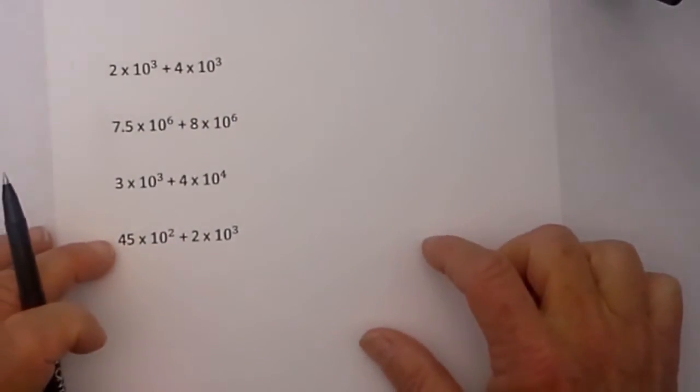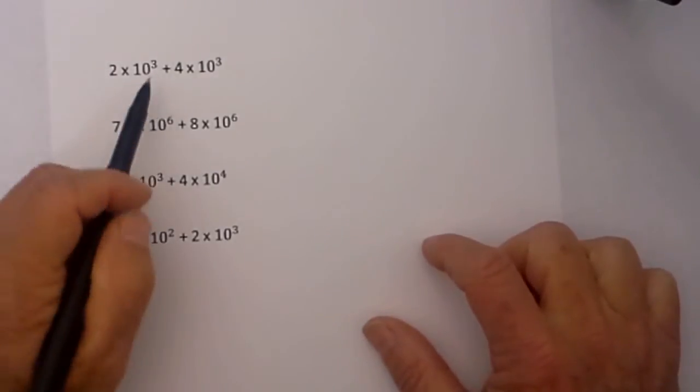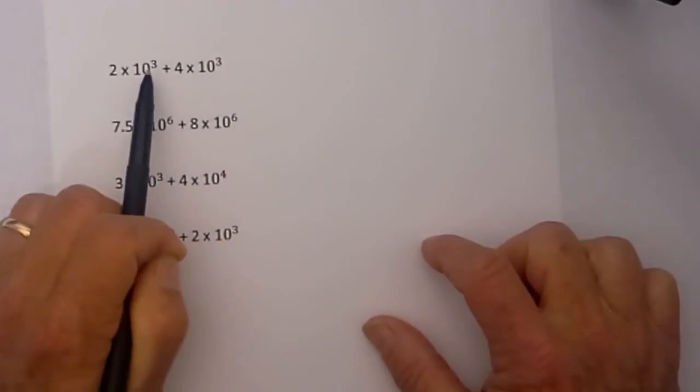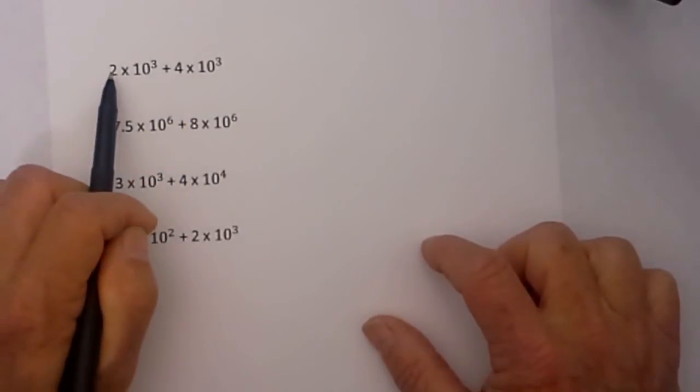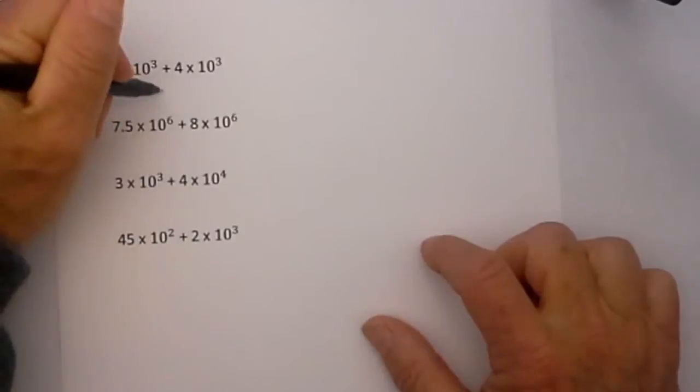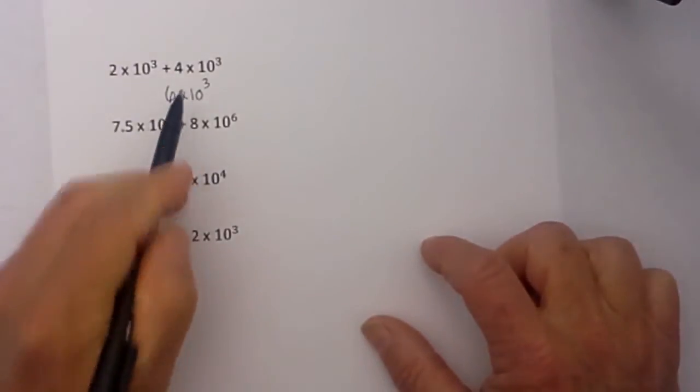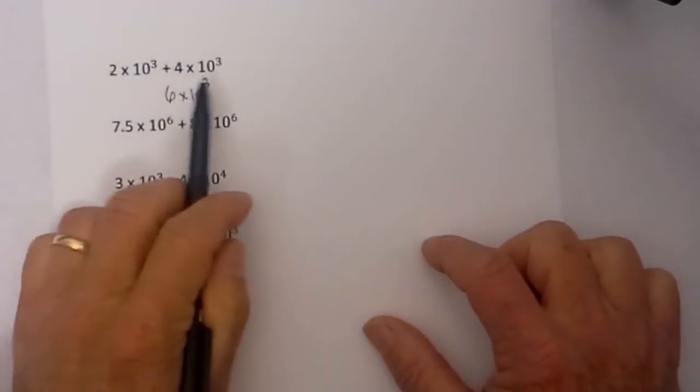In this example, let's check the powers are the same and the exponents are the same, so all we have to do is add the two coefficients. So 2 plus 4 is 6 times 10 to the third would be our solution when adding these two numbers.